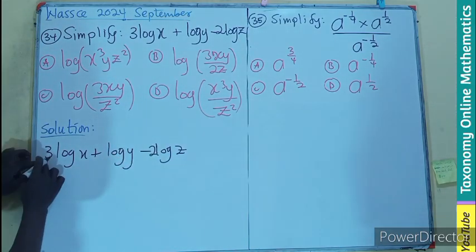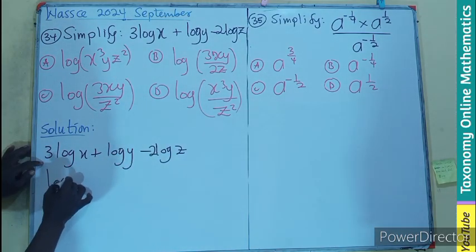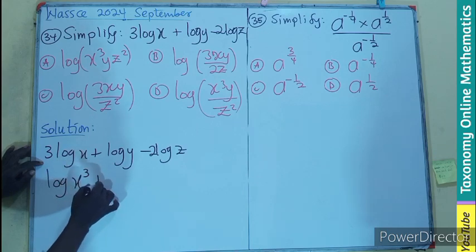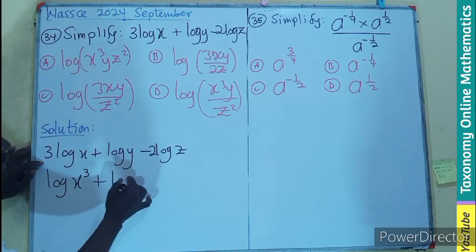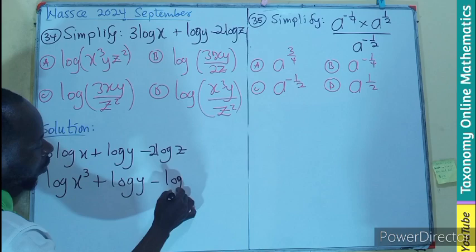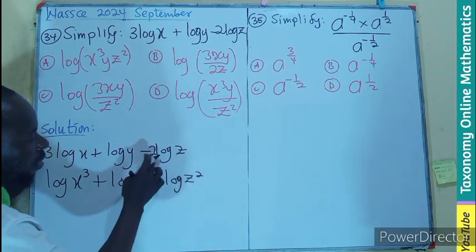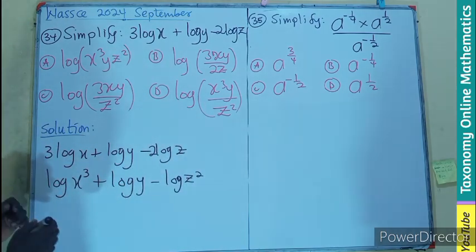So these 3 become log x exponent 3 plus log y minus log z exponent 2. These 2 become the square.